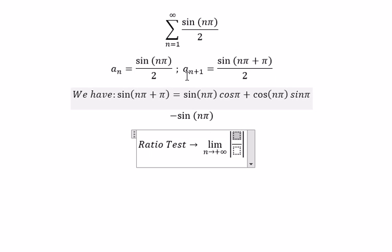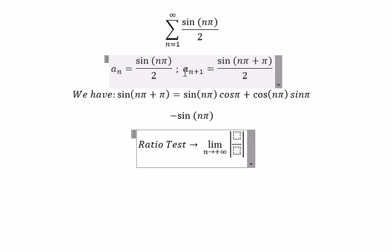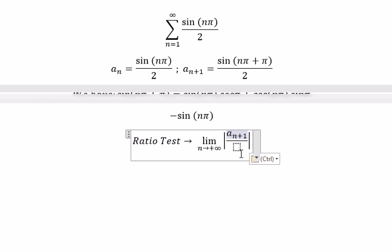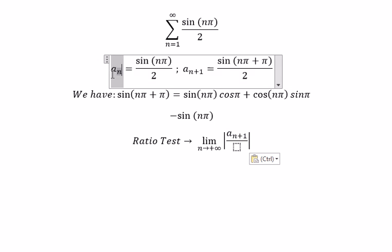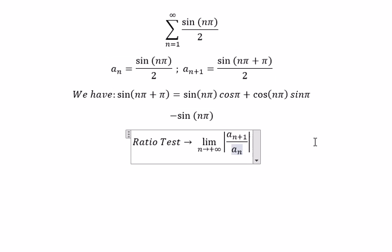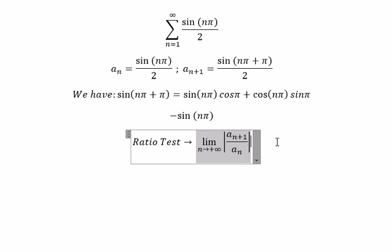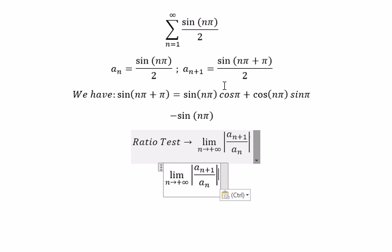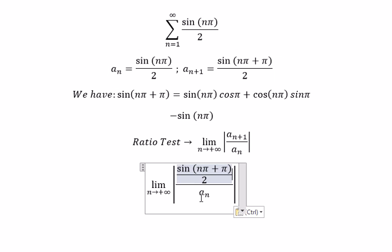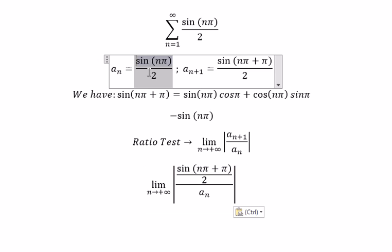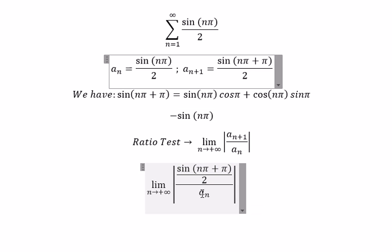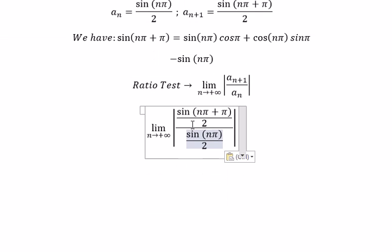So in this situation we put inside the absolute value, so we have a_(n+1) over a_n. So a_(n+1), that's this one. a_n, that's this one. But this one we just get negative sin(nπ) in here.